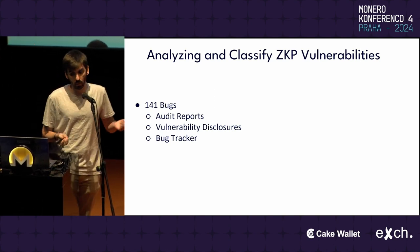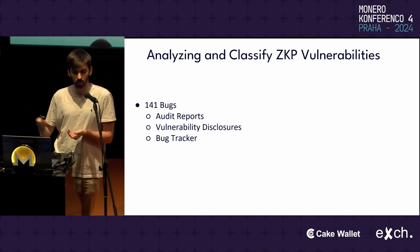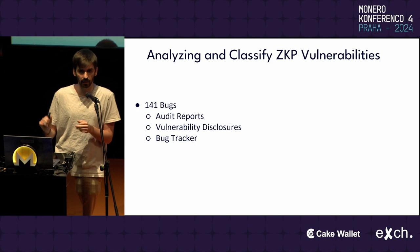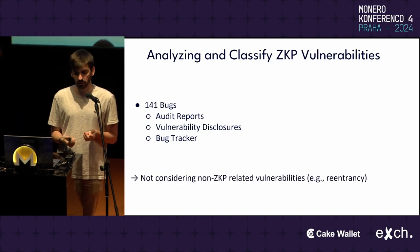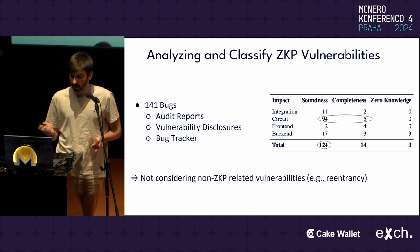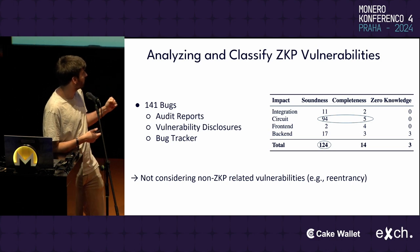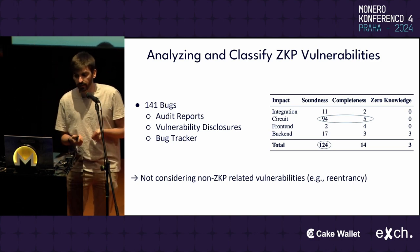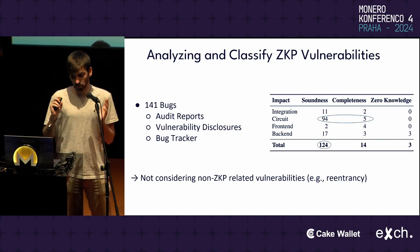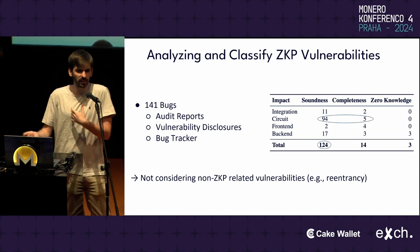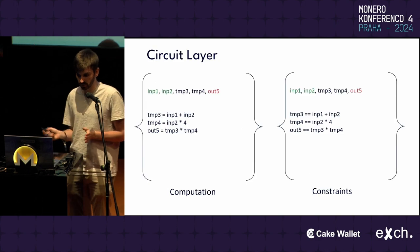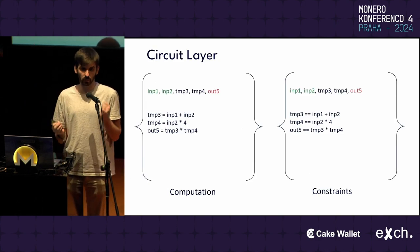In our work, we analyzed 141 vulnerabilities from audit reports, vulnerability disclosures, and bug trackers, focusing only on critical security vulnerabilities and excluding non-ZKP related ones. We categorize vulnerabilities based on layer and impact. The main impact is soundness bugs, which is the worst thing that can happen in an application using zero-knowledge proofs. Also, the most vulnerabilities are in the circuit layer.